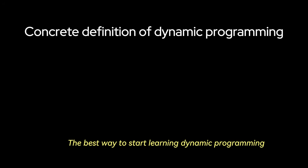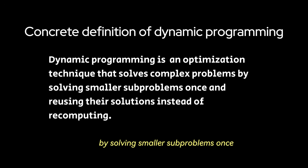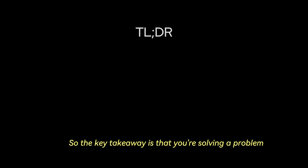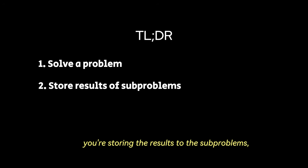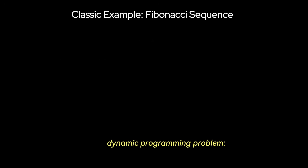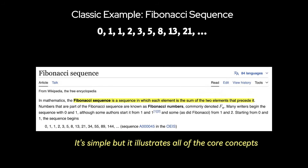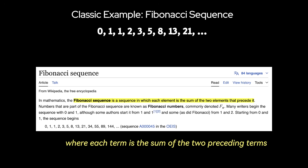The best way to start learning dynamic programming is with a concrete definition. Dynamic programming is an optimization technique that solves complex problems efficiently by solving smaller subproblems once and reusing their solutions instead of recomputing them. The key takeaway is that you're solving a problem recursively or iteratively, storing the results to the subproblems, and reusing them to avoid redundant calculations. We're going to start with a simple and very classic dynamic programming problem: the Fibonacci sequence. It's simple, but it illustrates all of the core concepts.